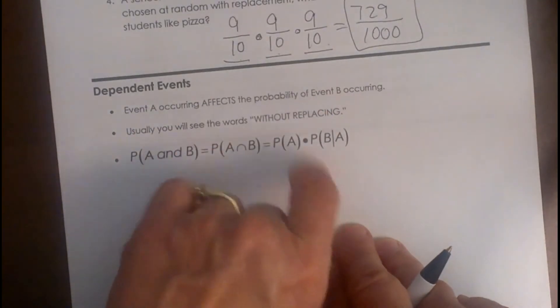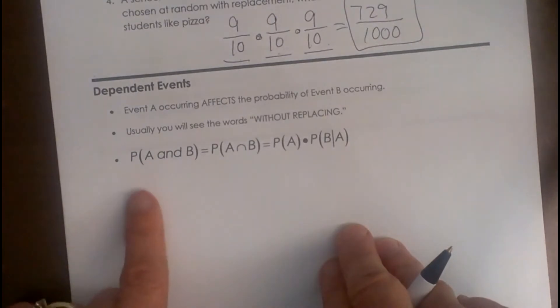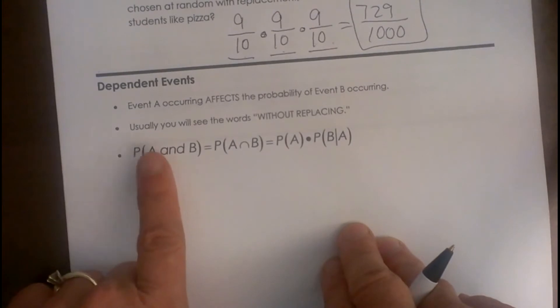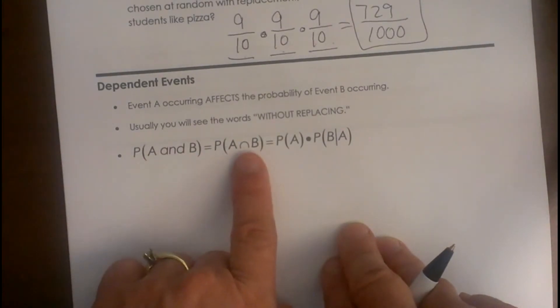Usually you will see the words like without replacement. So how do you figure these out mathematically? Well these problems, you take the probabilities, multiply them together, which is also known as the intersection.